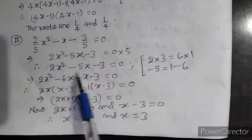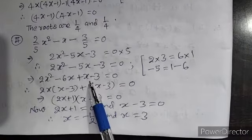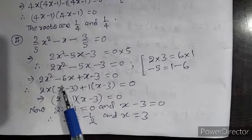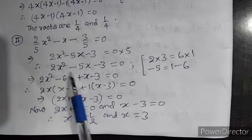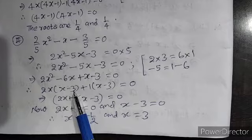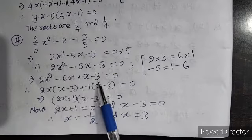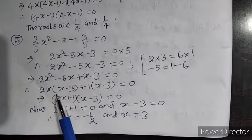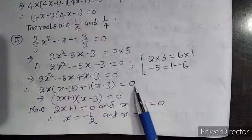the given expression becomes 2x square minus 6x plus x minus 3 equal to 0. Now, taking 2x common from first group 2x square minus 6x. Then, under bracket it will be x minus 3. Now, plus 1 is taken out common from x minus 3. So, you will get completely 2x x minus 3 plus 1 into x minus 3 equal to 0.